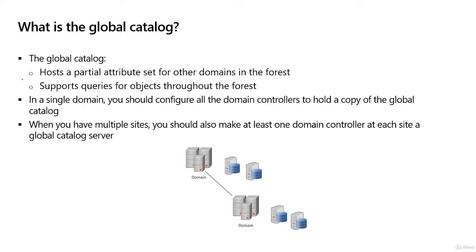One of the important roles we also have in Active Directory is the global catalog. Now some technical jargon to describe this that Microsoft always uses: they will always say the global catalog hosts a partial attribute set for other domains in the forest and supports queries for objects throughout the forest.